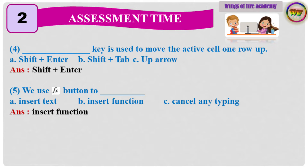Question 4: Dash dash is used to move the active cell 1 row up. Answer: Shift plus Enter. Question 5: We use function wizard button to dash dash. Answer: Insert function.